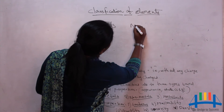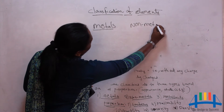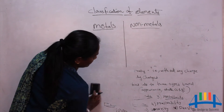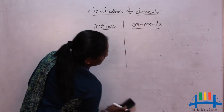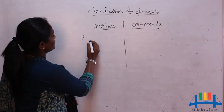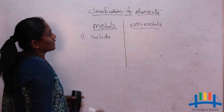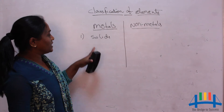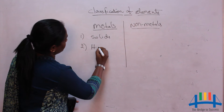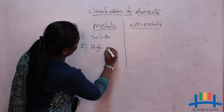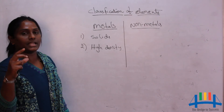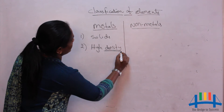We can differentiate metals from non-metals based on their properties. Regarding appearance, the maximum number of metals are solids. These metals also have high density. Density means thickness — that is, how much thicker they are makes them denser elements.